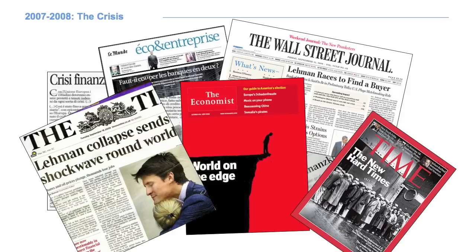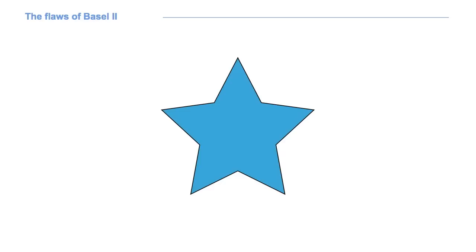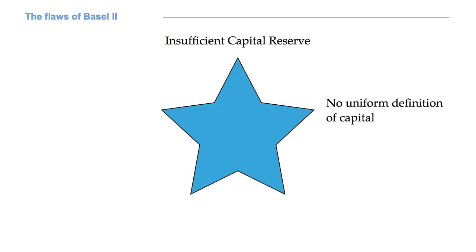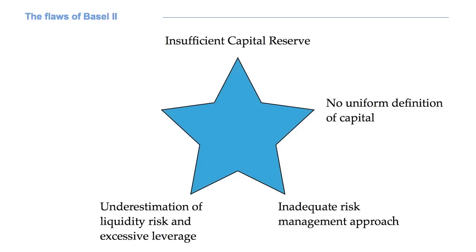The main flaws of the Basel 2 construction can be summarized as follows. First, it became clear that the capital reserves required by Basel 2 were insufficient in bad market conditions, as those of a world crisis. Surprisingly, Basel 2 contained no uniform definition of capital for banks, thus increasing the uncertainty on the markets. Inadequate risk management approaches were another flaw of Basel 2. In particular, it became evident that Basel 2 underestimated liquidity risk and excessive leverage as possible causes of financial distress for banks.